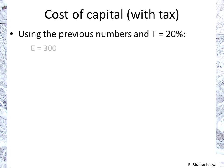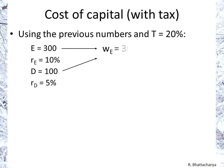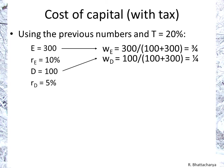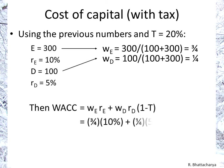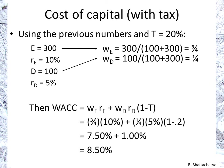Using our previous numbers with a tax rate of 20%: equity is $300k, debt is $100k, equity return is 10%, debt return is 5%. Weight of equity is three quarters, weight of debt is one quarter. WACC = 0.75 times 10% plus 0.25 times 5% times 0.8, giving a weighted average cost of capital of 8.5%.